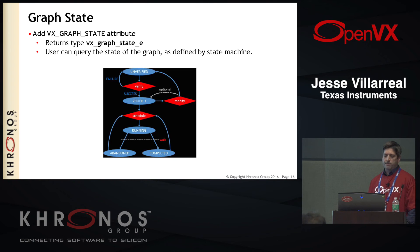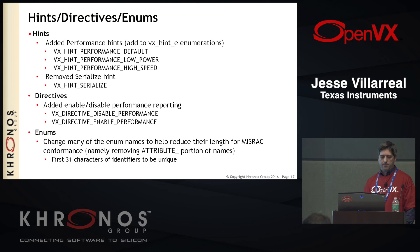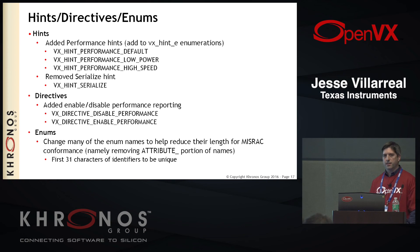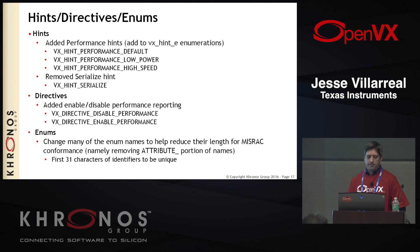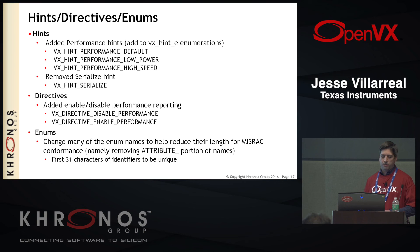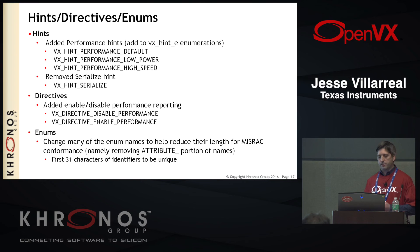We've added the state machine for the graph. Before it wasn't very well specified, so we've added VX graph state and you can query what state your graph is in. We've also added some various hints and directives — you can look at that in the spec. One thing to note is that for the enumerations, especially the attribute enumerations, if you're using an application with 1.0 right now, a lot of these enumerations have actually changed. The reasoning is that the identifiers had gotten so long — one of the rules in C is that the first 31 characters of identifiers should be unique. So we've shortened a lot of the attributes. The one most affected is the one that has the word 'attribute' in it — the attribute word has been removed.